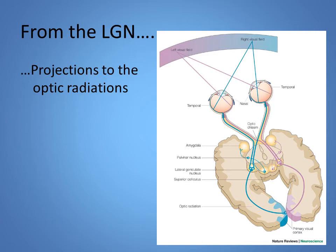This image shows how visual fields project to the opposite side. Look at the purple side, which represents the left visual field: that information goes to each right retina. The medial side of the left retina crosses at the optic chiasm; the lateral side of the right retina does not cross. Both sets of optic nerve fibers come from the left visual field and end up at the right lateral geniculate nucleus and the right primary visual cortex. So the information in the cortex is contralateral to the visual field it represents.